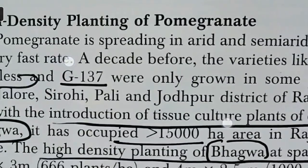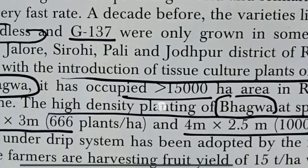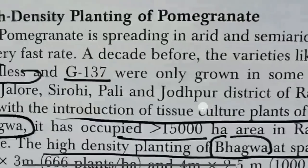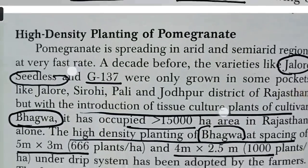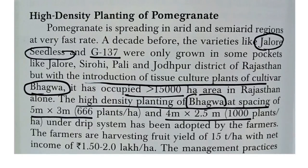In the case of pomegranate, previously the varieties Jalor Seedless and G137 were popular under cultivation, but nowadays the Bhagwa variety is most preferred by growers.